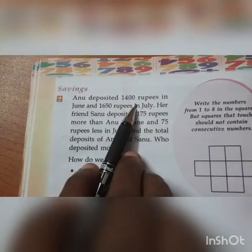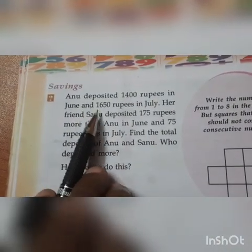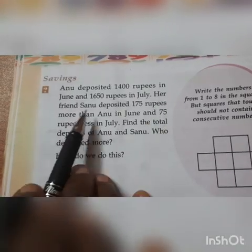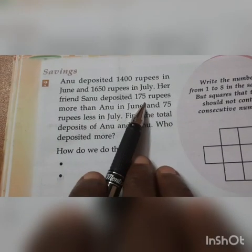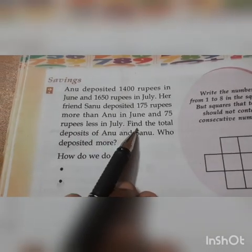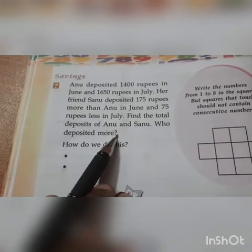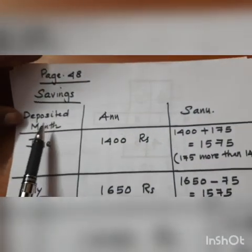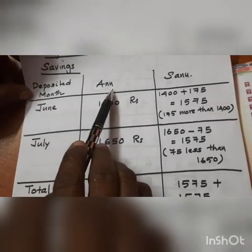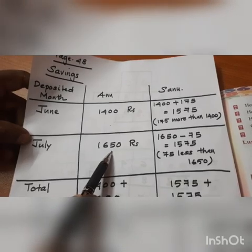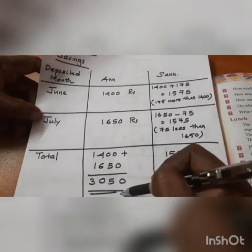Anu deposited 1400 rupees in June and 1650 rupees in July. Her friend Sanu deposited 175 rupees more than Anu in June and 75 rupees less than Anu in July. Find the total deposits of Anu and Sanu and who deposited more. Look here: June, Anu deposited 1400; July, 1650. Total 3050.